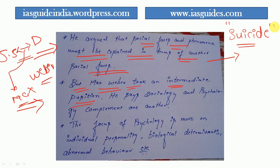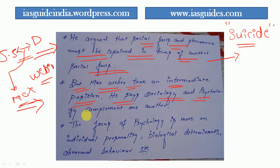Max Weber took the intermediate position, saying that sociology and psychology actually complement one another. They are not divergent — whatever explanation is given in psychology has some relevance for sociology, and whatever is explained in sociology has some relevance in psychology.